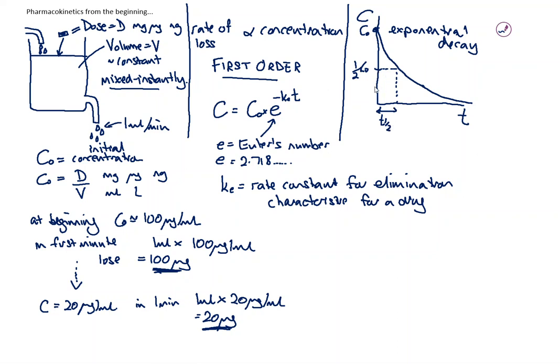If we go from half C naught to a quarter C naught, that takes the same amount of time. From a quarter to an eighth is also the same. No matter where you choose, if you start at a concentration and go down to half that concentration, the time taken will be the half time.